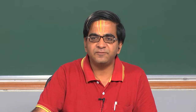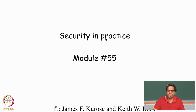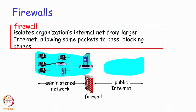From this module onwards we will actually try to see a set of products or tools that are typically deployed on the network security point of view and why they are very critically required for any kind of a network topology in an organization. One of the first kinds of devices from the network security point of view that we will very commonly come across is something called as a firewall. So what exactly is a firewall and what is it actually trying to do?